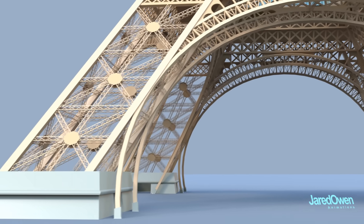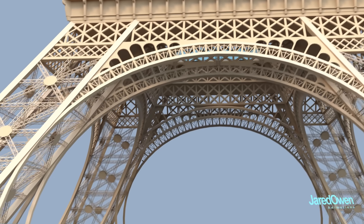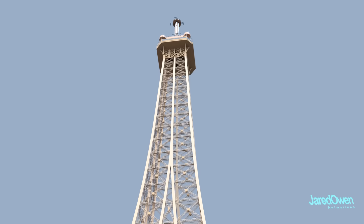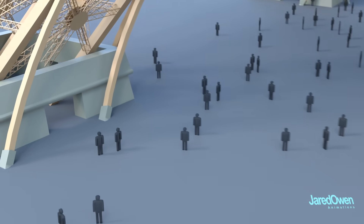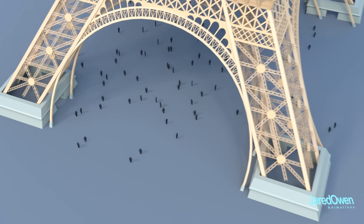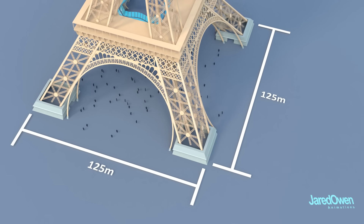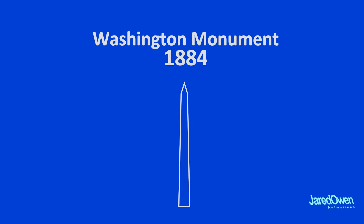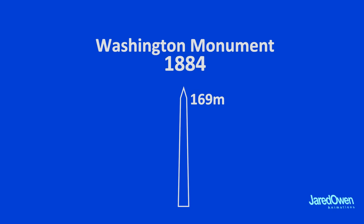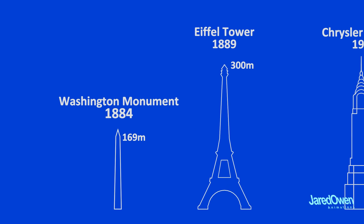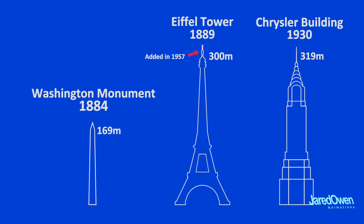Over the last 130 years, they've done their best to maintain as much of the original structure as possible while keeping it safe for millions of visitors every year. Before the Eiffel Tower was built, the tallest structure in the world was the Washington Monument at 169 meters. The Eiffel Tower was almost twice as tall at 300 meters. It was the tallest structure for 40 years until the Chrysler Building was finished in 1930. But once the antenna was built on top of the Eiffel Tower, it was once again taller than the Chrysler Building.